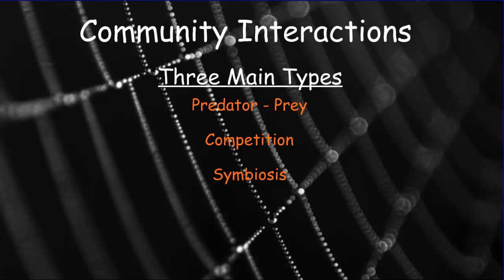When we first start talking about energy flow within an ecosystem, we have to talk about the interactions that go on within the communities in those ecosystems. There are three main types we'll talk about today: the predator-prey relationship, competition, and symbiosis and its various forms.